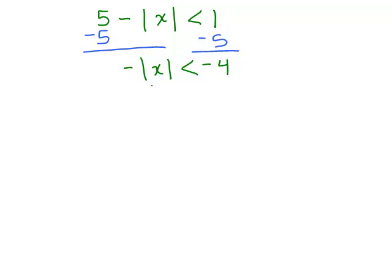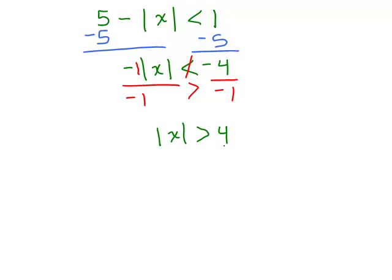That gives me on the right-hand side 1 minus 5, which is negative 4. Now you still haven't isolated the absolute value — you have a minus sign in front of it. So multiply or divide both sides by negative 1. When you divide an inequality by a negative number, that's going to switch to greater than. So what I have left is absolute value of X is greater than negative 4 divided by negative 1, which is positive 4.